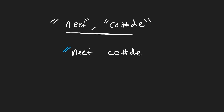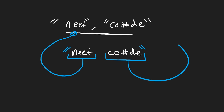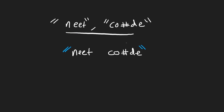Wouldn't it be nice if in the encoded string we already knew how many characters go in the first word, how many go in the second word, and so on? Then we could say: take the first four characters and decode them back into the first word, then take the next five characters and decode those into the second word. So how could we do something like that?